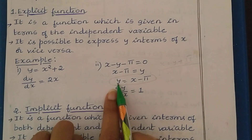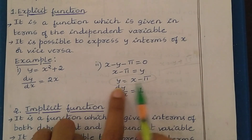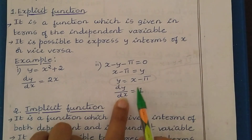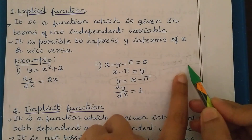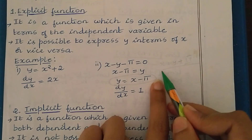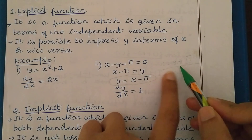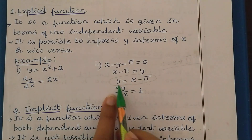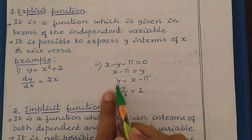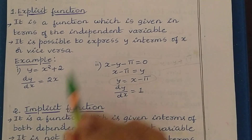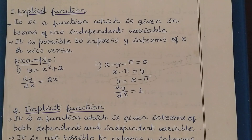These kinds of functions are known as explicit functions, where we have dependent and independent variables, and we can express one variable in terms of another variable — for example, y in terms of x, or x in terms of y. We can easily find the derivative for explicit functions.